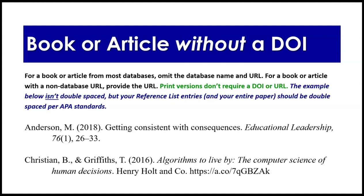Quick note: the examples below aren't double-spaced so we can fit two in there, but your reference list entries and your entire paper should be double-spaced per APA standards, unless your instructor says otherwise. So: author M. Anderson, published 2018, title 'Getting Consistent with Consequences' — capital G, nothing else capitalized. Author period, date period, title period. Source journal is Educational Leadership, italicized, comma, volume 76, also italicized, issue 1 in parentheses, not italicized, page range 26 through 33. This second entry has two authors with an ampersand — per APA standards.